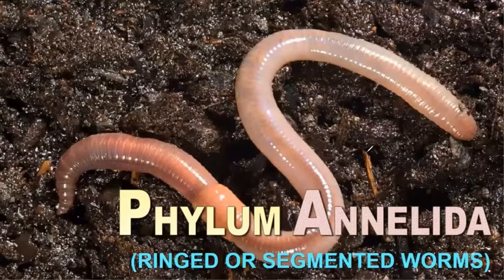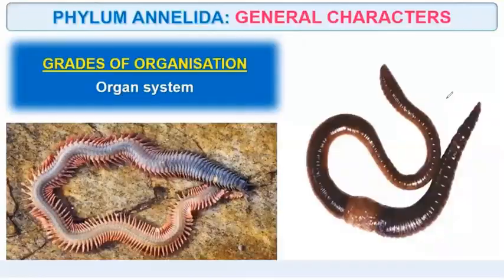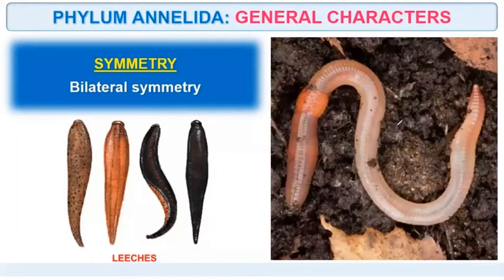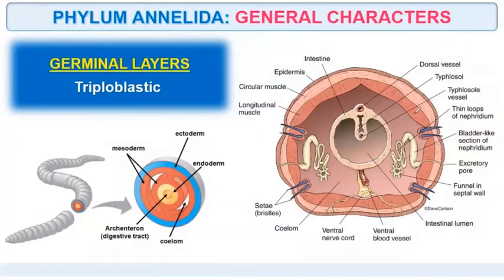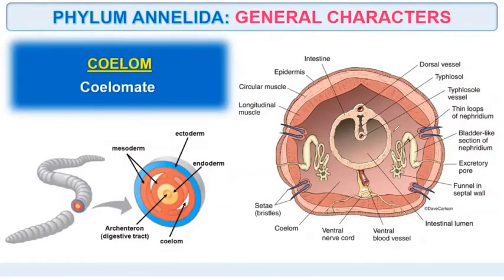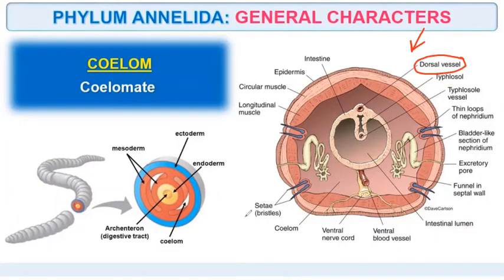Moving ahead with another phylum — Annelida. These are ringed or segmented worms. Organ system of organization is present and bilateral symmetry is there. These organisms are triploblastic as well as coelomate. As seen in the diagram, they have a dorsal blood vessel, meaning a blood circulatory system is also present. A coelom is there leading to an intestinal lumen, vertical blood vessels, and a ventral nerve cord.